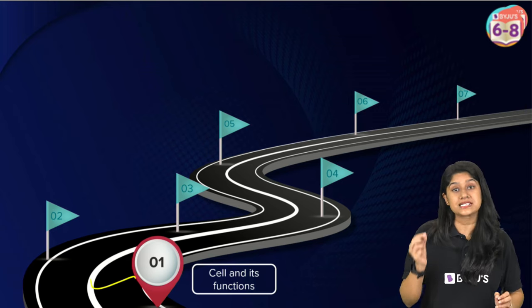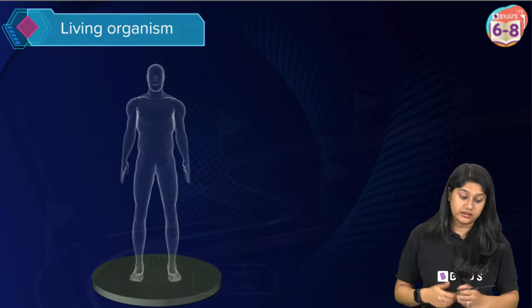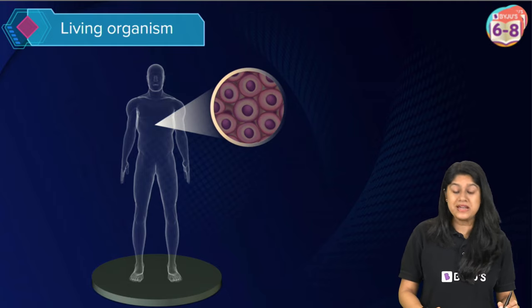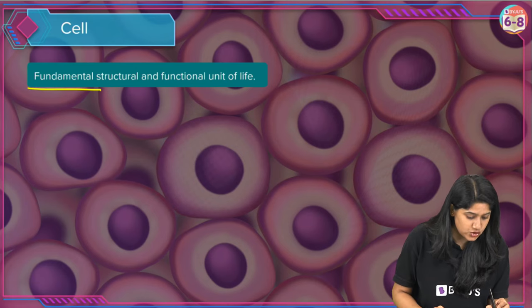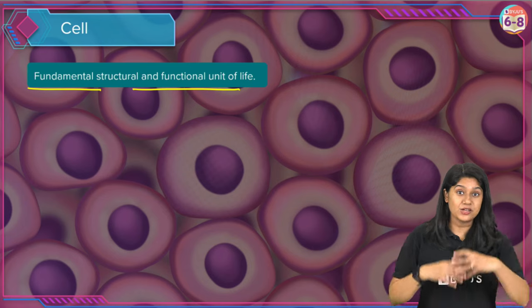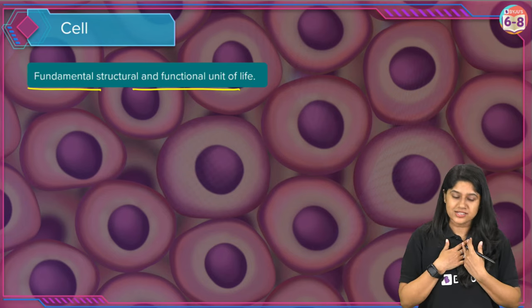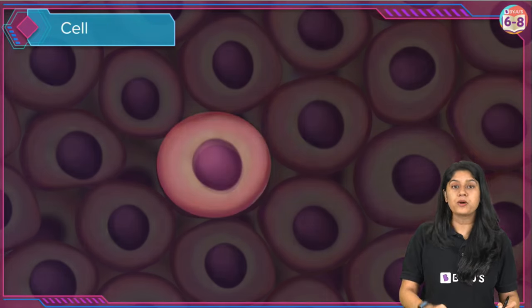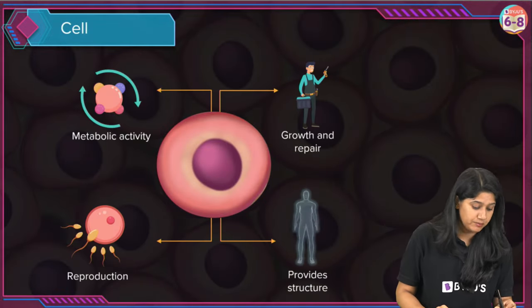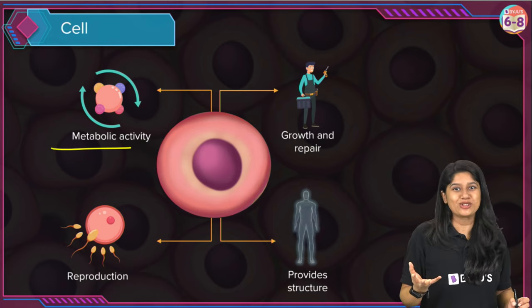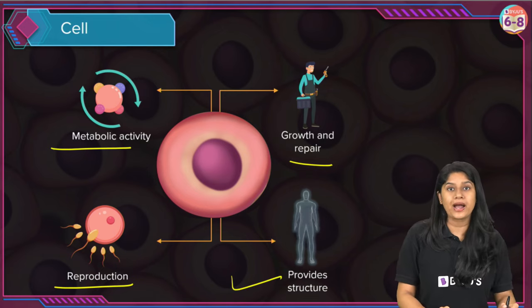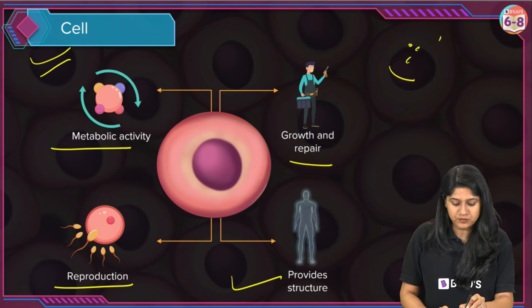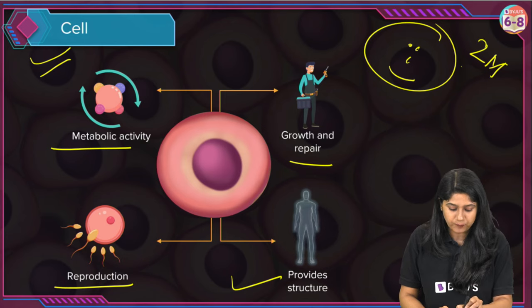The first thing we will be discussing is the cell and its function. In living organisms we are made up of cells. We call cells the fundamental, structural and functional unit of life. Cells come together and form multicellular organisms like us, and of course we also have unicellular organisms. Cells help in metabolic activities, growth and repair of individuals, reproduction, and provide structure to the body. These are important functions that can come for two marks.